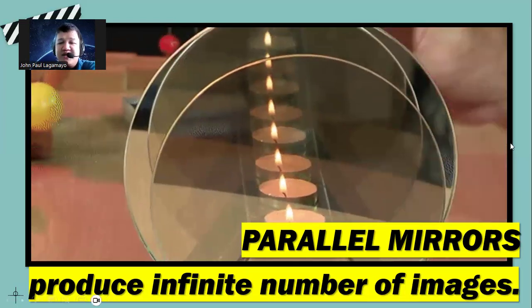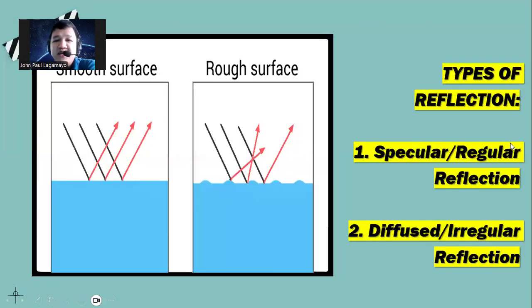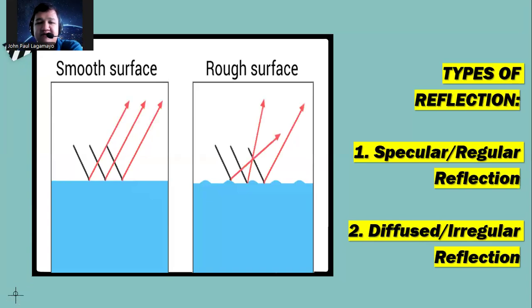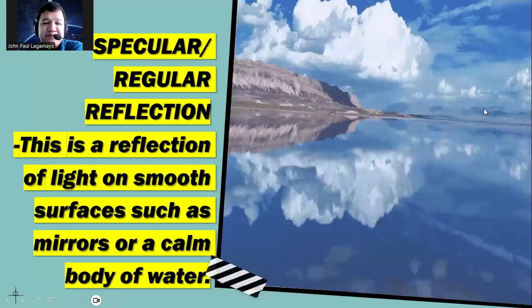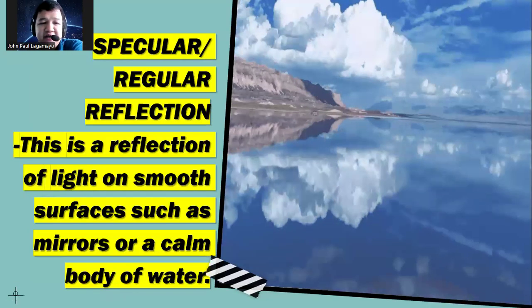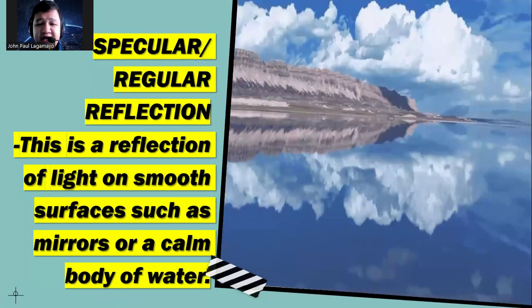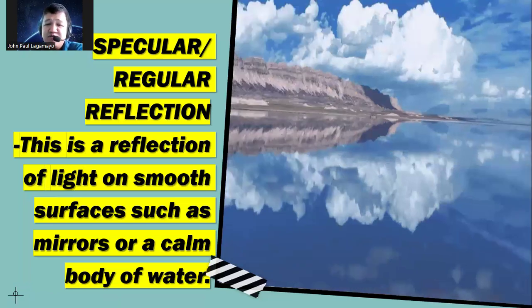We have here two different types of reflection: what we call as the specular or regular reflection, and then the diffused or irregular reflection. Diffused reflection commonly happens on rough surfaces. Next, an example of a specular or regular reflection—commonly this is on a smooth surface, or let's say calm water. As you can see, the object would reflect back the image as the same.